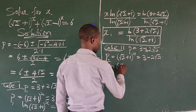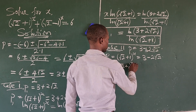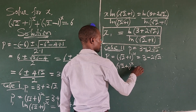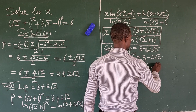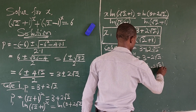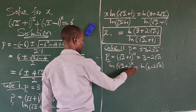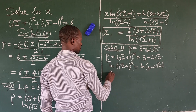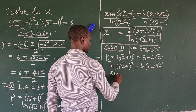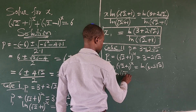For Case 2, p₂ = 3 - 2√2. So we have (√2 + 1)^x = 3 - 2√2. Applying the natural logarithm to both sides: ln[(√2 + 1)^x] = ln(3 - 2√2).